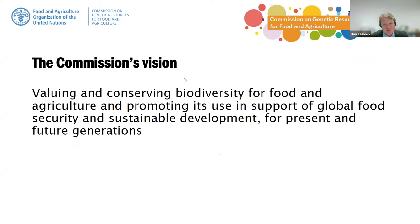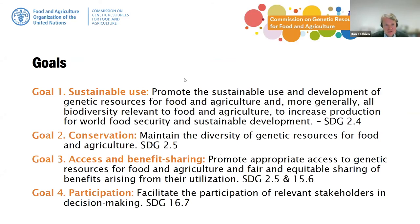The commission's vision is to conserve and manage biodiversity for food and agriculture in support of global food security and sustainable development, for now and for the future. It has adopted four goals: sustainable use, conservation, access to genetic resources for food and agriculture, sharing of benefits derived from the utilization of genetic resources, and full participation of all relevant stakeholders in decision-making processes. As you can see on the slide, these goals are also reflected in the Sustainable Development Goals.